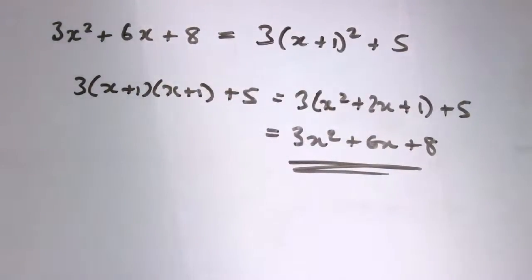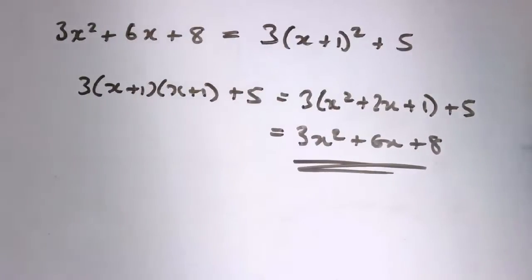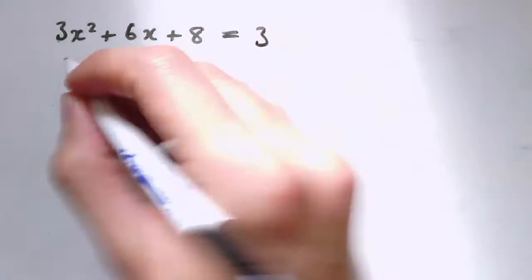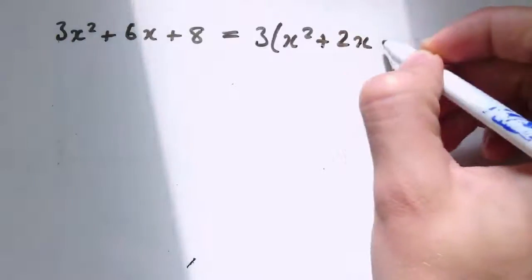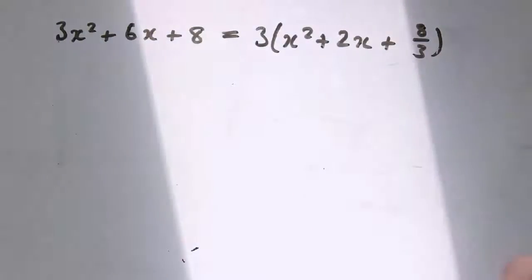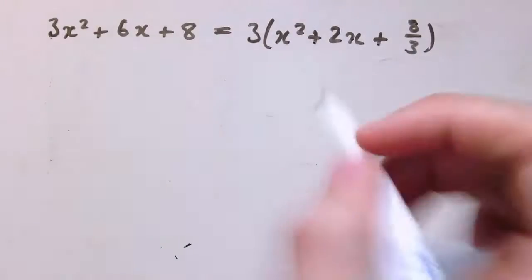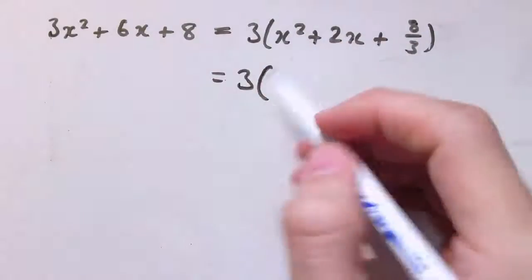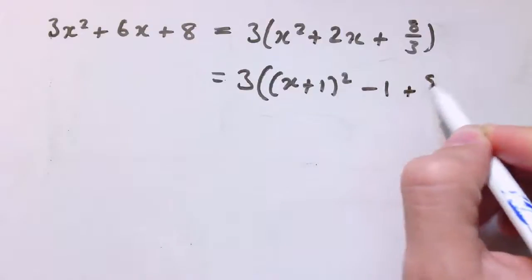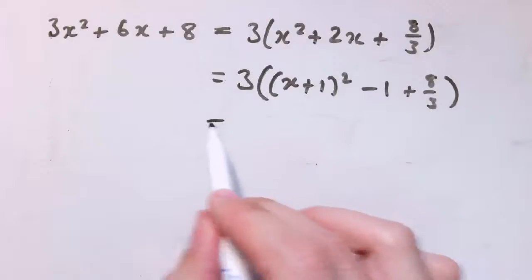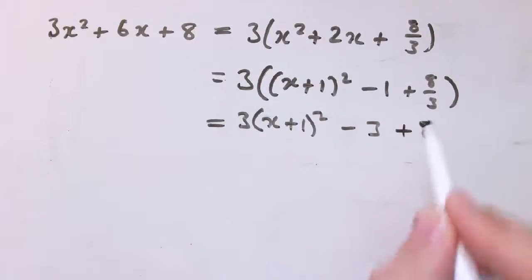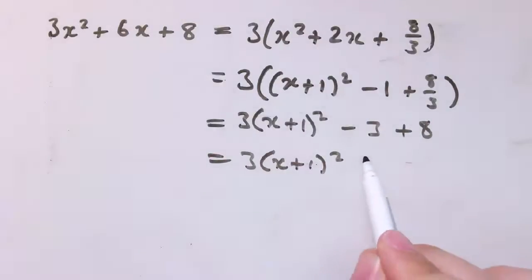Once we notice that, we can proceed as before. If I didn't already know the answer, I would pull out the 3: so it becomes 3 times x squared plus 2x plus 8 thirds. Now inside the brackets we just have a monic quadratic. Half of 2 is 1, so that's x plus 1 squared. I subtract 1 squared and add on 8 thirds. Multiplying back out I get 3 times x plus 1 squared, then 3 times negative 1 plus 8 thirds, giving minus 3 plus 8, so 3 times x plus 1 squared plus 5.